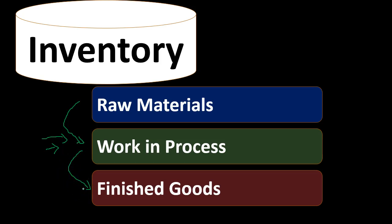Once we're done, we can sell the guitar — it's ready to be sold and within finished goods we can put it on the market. Once it's in the finished goods state, we're in a similar position as a merchandising company that would just purchase and sell goods. After it's sold, it moves to cost of goods sold on the income statement, which is the next step — recording the expense in the form of cost of goods sold.